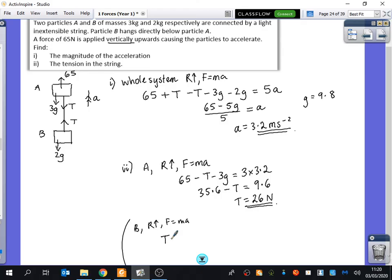I'm going to look at B, and I'm going to resolve upwards using F equals MA. And I have my resultant force is T minus 2G. I've just got that one going up and that one going down. And that's going to be equal to the mass, which is 2, times the acceleration, which is 3.2. So it looks like the tension is going to be 2 times 3.2 plus 2 times 9.8. And we get that tension is equal to 26 Newtons as well.